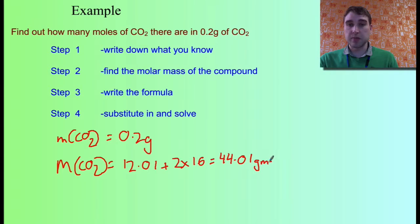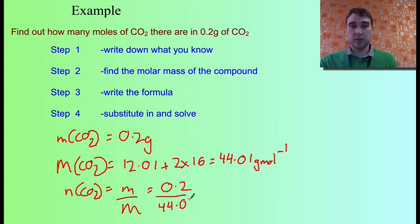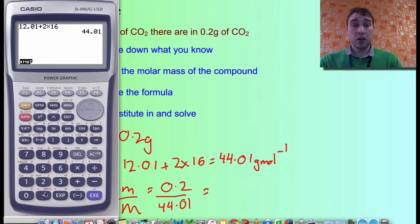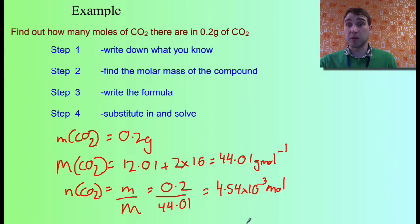The unit for molar mass is grams per mole. The next step is to write the formula: number of moles of carbon dioxide equals mass divided by molar mass. Mass is 0.2, molar mass is 44.01. Using the calculator: 0.2 divided by 44.01, keeping all significant figures, equals 4.54 times 10 to the minus 3. So in 0.2 grams of carbon dioxide there are 4.54 × 10⁻³ moles of carbon dioxide.